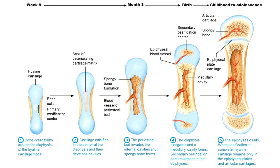When we talked about building bones using endochondral ossification, there was one type of bones — a structural classification — that we don't build using endochondral ossification. Does anyone remember which type of bones don't start from this cartilage model? It's the flat bones — bones of the skull, the sternum, the ribs. Flat bones don't develop this way, but pretty much everything else in your body does.